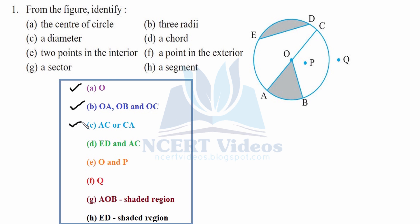The diameter can be written as CA as well. Now D: a chord. ED is a chord that joins two points on the circle. Similarly, AC is the longest chord. Now E part: two points in the interior — O and P are clearly inside the circle.